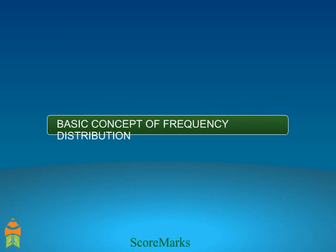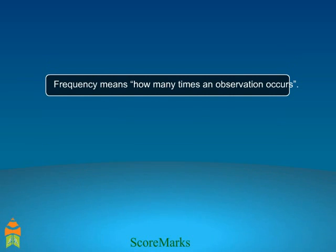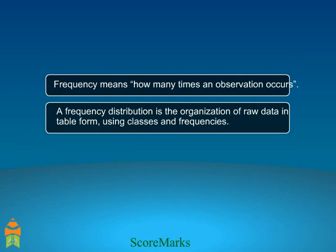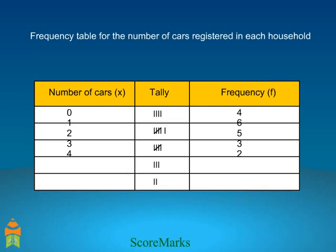Basic concept of frequency distribution. Frequency means how many times an observation occurs. We use a frequency distribution table to organize raw data in table form using classes and frequencies.